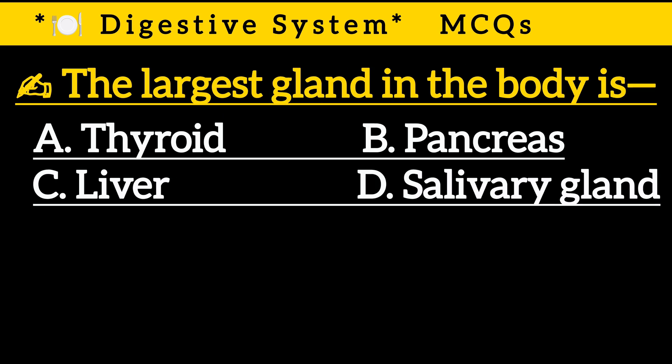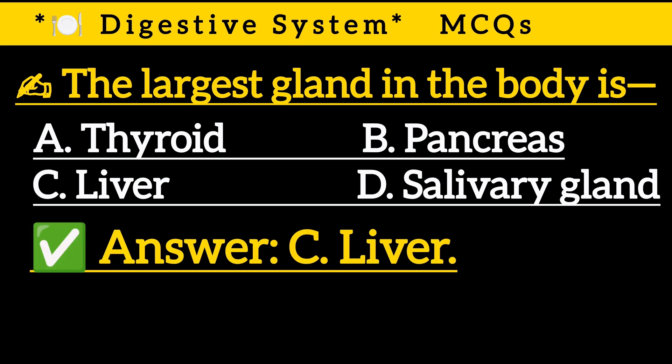Question 4: The largest gland in the body is — Option A: Thyroid, Option B: Pancreas, Option C: Liver, Option D: Salivary gland. Correct answer is Option C: Liver.